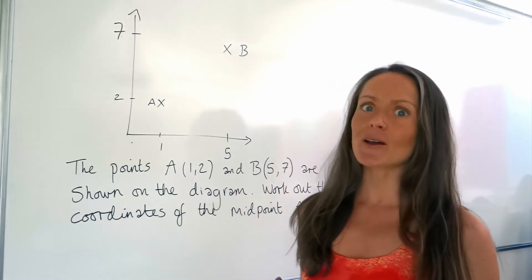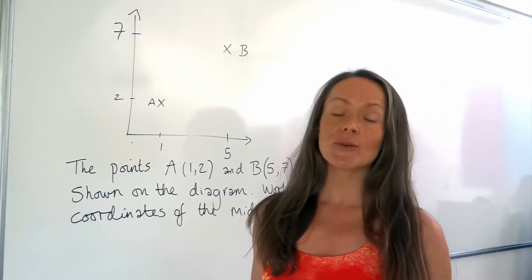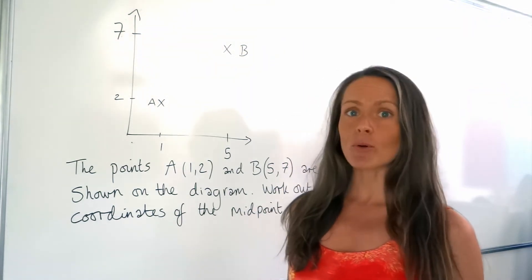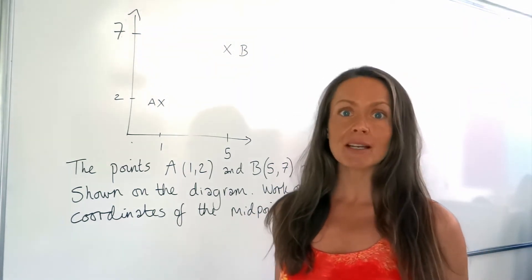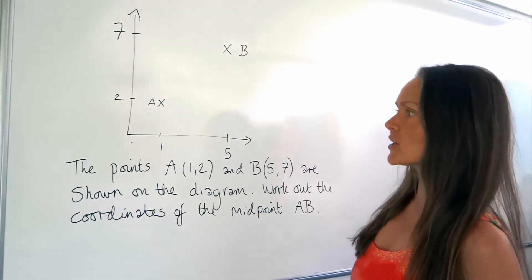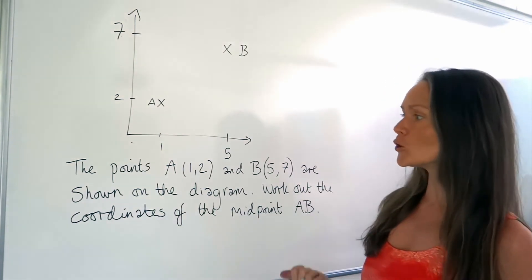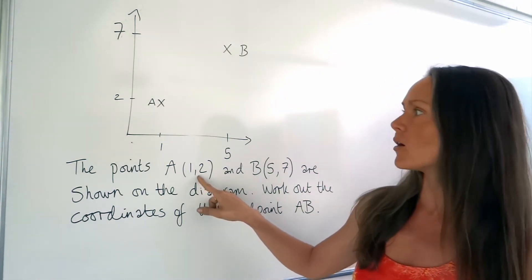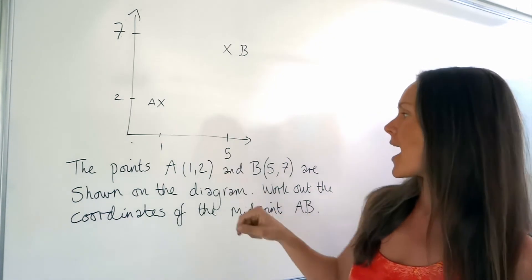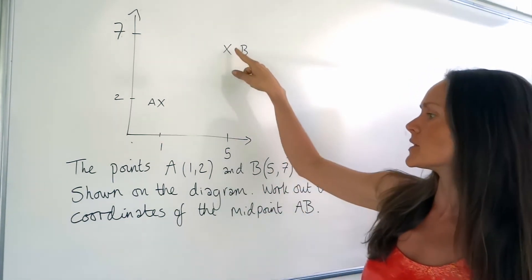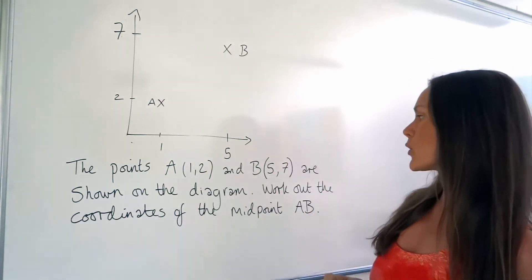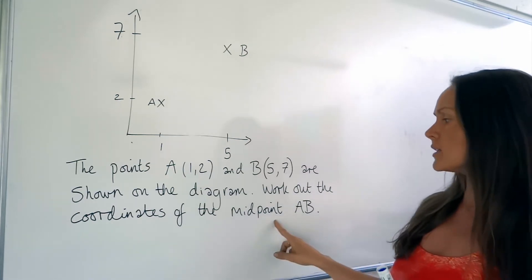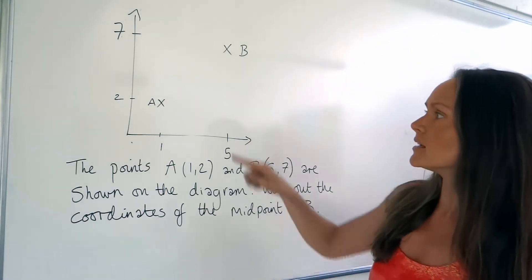Hey guys, in this video I'm going to be showing you how to work out the midpoint of a line. So the midpoint is just the middle of that line. In this question here, I've got two points, A and B. The coordinates of A are 1, 2, and B is up here at 5, 7. So we have to work out the coordinates of the midpoint of that line AB.